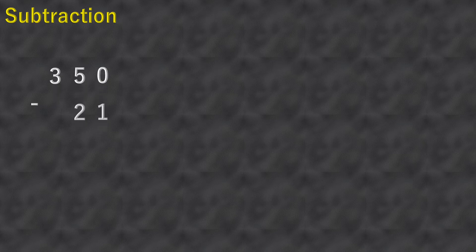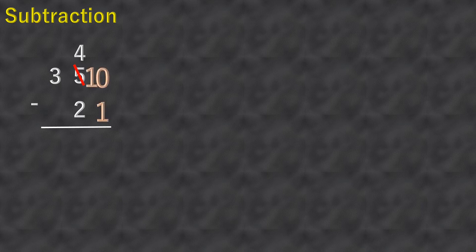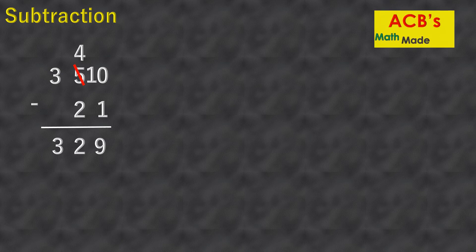We're now working with hundreds. Three hundred fifty minus twenty-one. Zero is less than one, so we must borrow one from the five — the five will become four and the zero will become ten. Ten minus one equals nine, and four minus two equals two. Then bring down three. So three hundred fifty minus twenty-one equals three hundred twenty-nine.